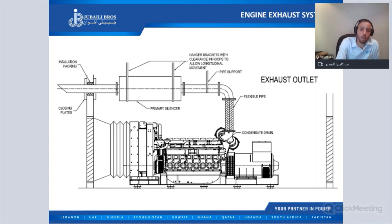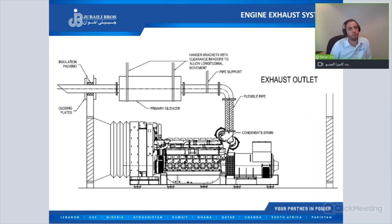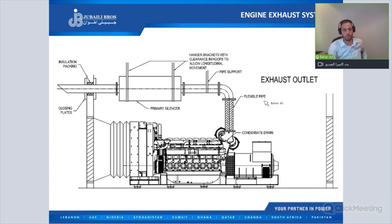For the exhaust pipe routing, it should be as short and direct as possible. We have to reduce the number of bends and bends in the exhaust pipe route. We recommend using Schedule 40 steel pipe for the exhaust piping. For our projects, we use Schedule 40 black steel iron pipes.